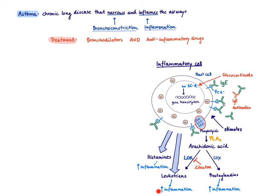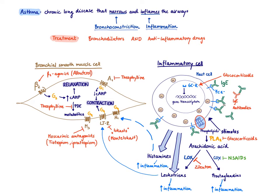Leukotrienes are potent inflammatory mediators, but that's not the whole story. Leukotrienes are also potent bronchoconstrictors — you can see their effect on the bronchial smooth muscle cell via leukotriene receptors that mediate smooth muscle contraction. Histamines can also lead to smooth muscle contraction. Please remember that we do not use antihistamines for asthma treatment. Even though it would make sense, those drugs are not efficacious in asthma — probably because there are so many mediators involved that blocking histamine alone doesn't make a significant difference.